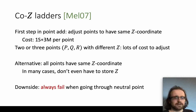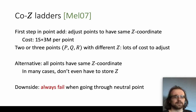There is, however, a significant downside to cozy ladders for all their advantages: you always fail if any one of the points P, Q, or R becomes the neutral point. This is because the neutral point has z equals zero, so if Q becomes the neutral point, all three points share the same z equals zero, giving the invalid zero-over-zero representation.